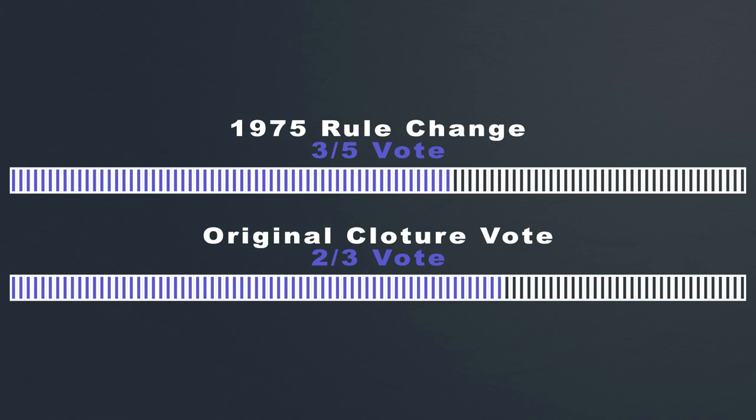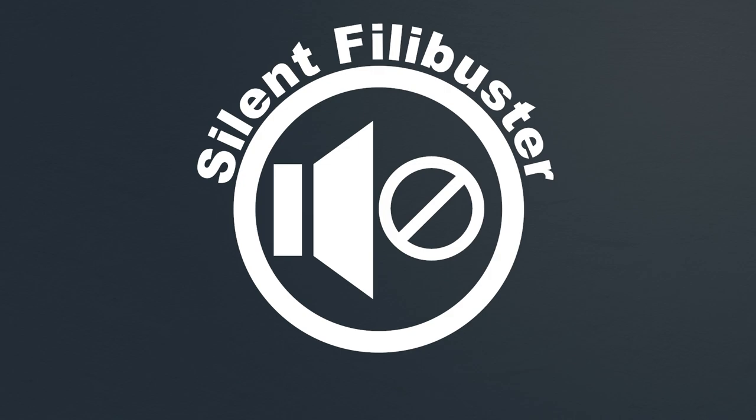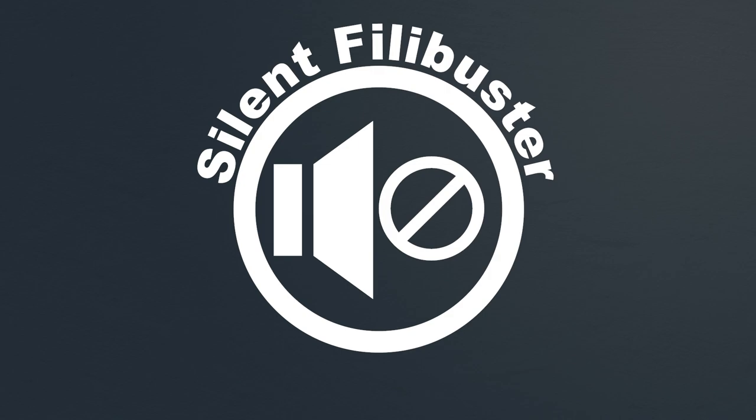One more type of filibuster that hasn't been mentioned in this video is the silent filibuster. A silent filibuster is when at least 41 senators threaten to filibuster a bill, which could be enough for the Senate majority leader to not even call a vote for the bill.